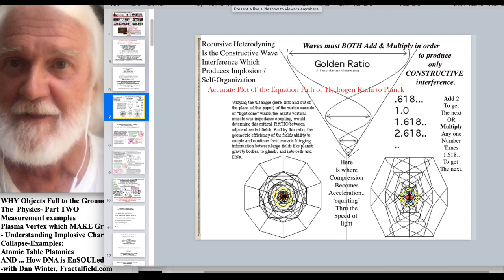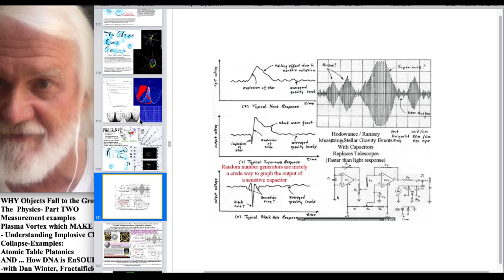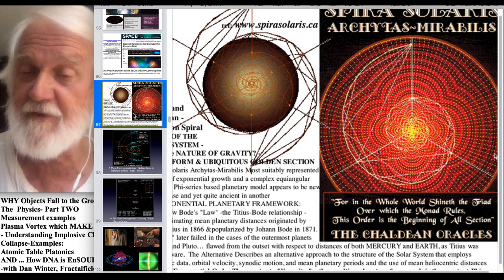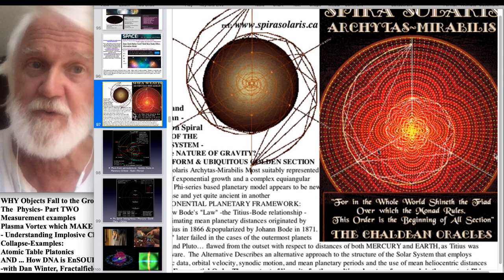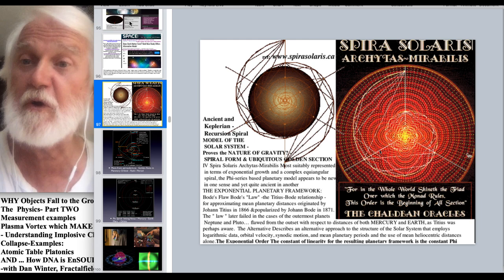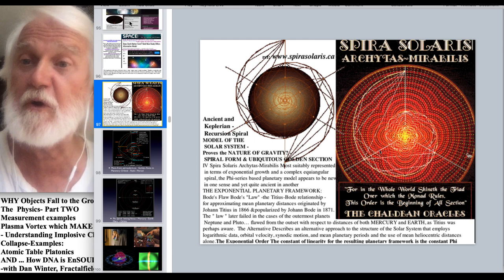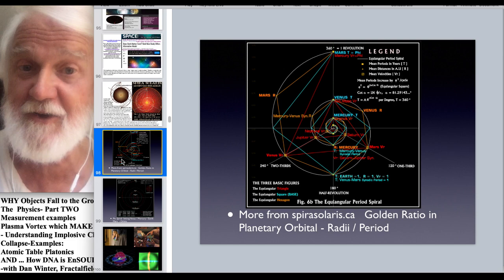We go to this slide show longitudinal compressed slide number 97. And just some visuals for kind of review of last time before we move on to the atomic table section as implosive charge collapse and DNA. So effectively at spirosolaris.ca they did a great job of documenting the fingerprint of golden ratio all over gravity relations. Specifically here in the solar system for example.